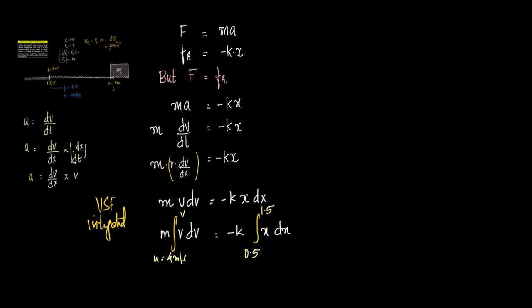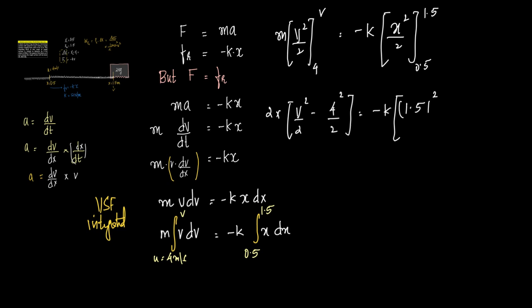This becomes m into integral of v is v square by 2, varying from 4 meter per second to v meter per second, is equal to, thus giving you the change in kinetic energy, minus k into integral of x is x square upon 2, varying from 0.5 to 1.5. So this gives you further, what's value of m? The value of m is 2 kilograms, so 2 into v square by 2 minus 4 square by 2 is equal to minus k into 1.5 square divided by 2 minus 0.5 square divided by 2.